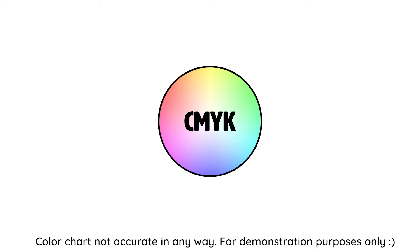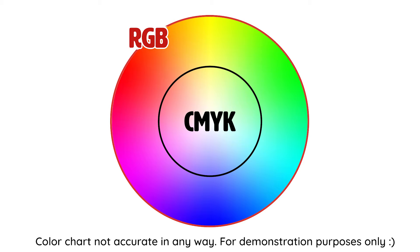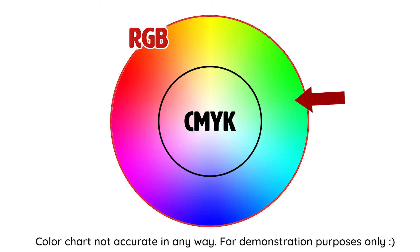The CMYK color mode includes only the colors that you could actually print with, and then the RGB color mode is the colors that a monitor can display. So these include the colors that are in CMYK, but it also has more colors — usually brighter, more vibrant colors. So anything that you have in CMYK is also available in RGB, but there are some colors in RGB that are not available in CMYK.